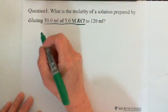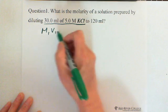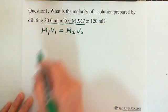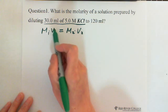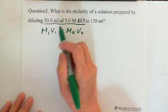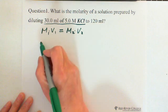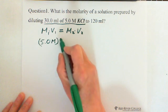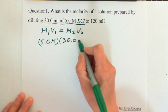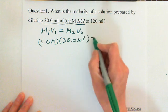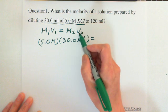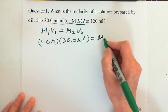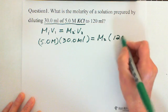Follow the formula, we write M1V1 equals M2 times V2. M1V1 refers to the high concentrated solution. So we put 5.0 molarity and multiply by V1, which is 30.0 milliliters, equals M2 — the molarity after diluting, which we're looking for — multiplied by 120 milliliters, which is the final volume.